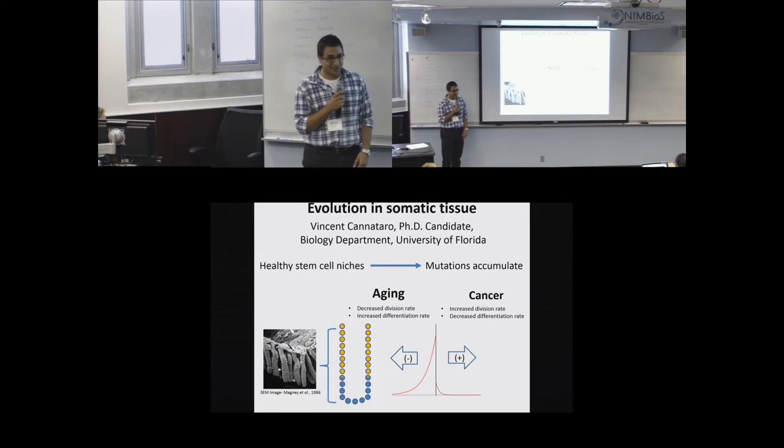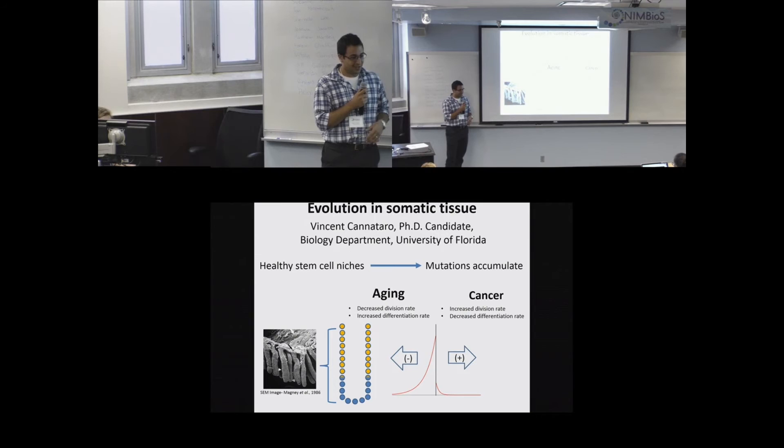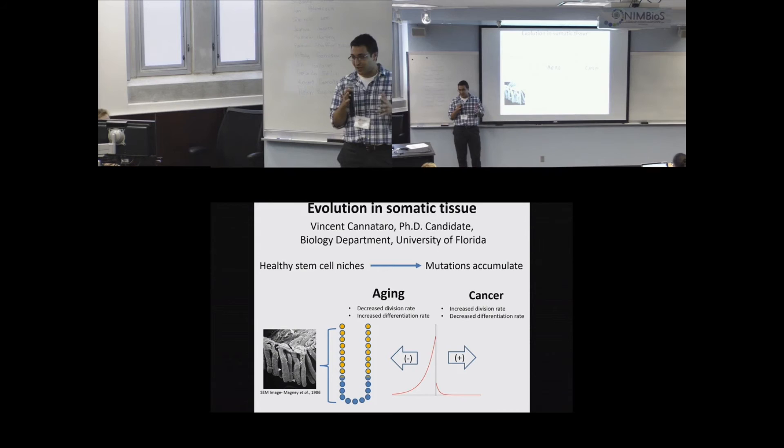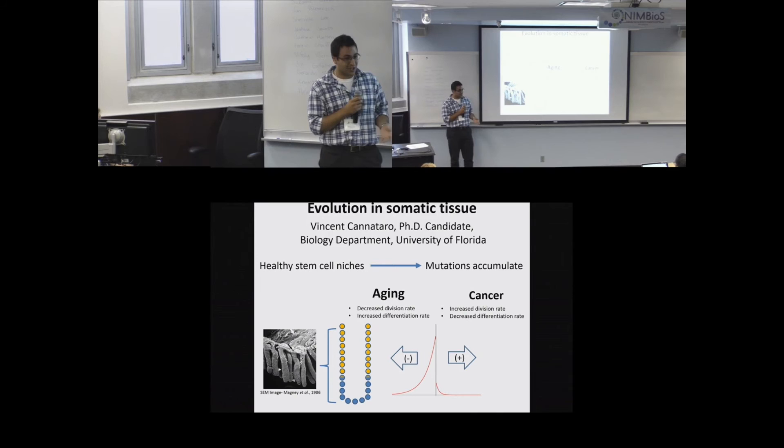I'm Vincent from UF, and this is the Many-Cell Modeling Workshop. We're all sitting here at about 30 trillion cells. Since I started talking, a million cells in your body have died, but we're not shrinking — other cells divide to replace them. This continual flux is normal, but every time a cell divides there's a chance for a mutation.